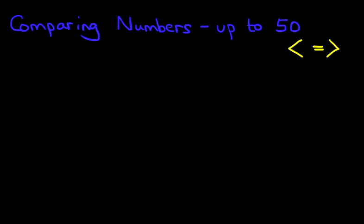So let's have a look at our first example. Let's suppose we've got these two numbers: we've got 46 and we've got 38. So we've got 46 and 38 — which symbol goes between them?